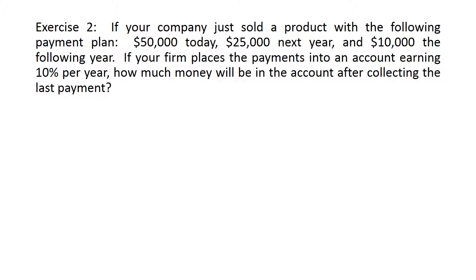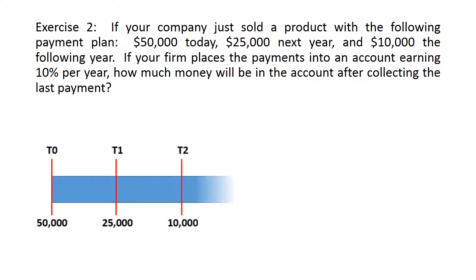We will have to find each one separately using the future value equation and then get the summation. All of these amounts are put in an account that pays 10%, but each one has a different number of time periods. To simplify, we put it in a timeline. At t0 we have 50,000 — the amount we are investing today. At t1, after one year, we have the 25,000.